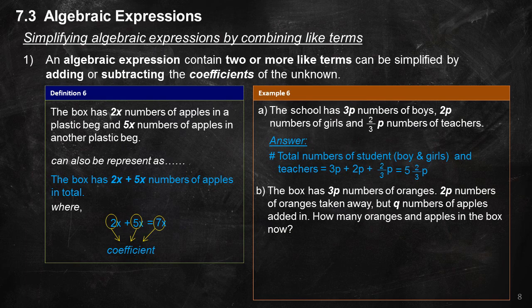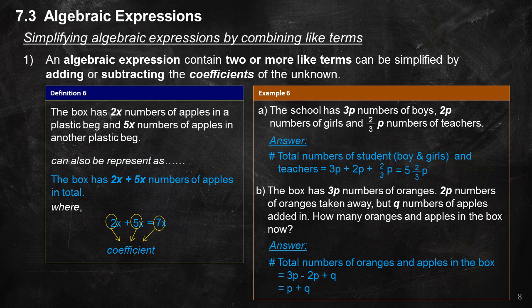Example 6B: The box has 3P numbers of oranges; 2P numbers of oranges are taken away, but Q numbers of apples are added in. How many oranges and apples are in the box now? Answer: Total numbers of oranges and apples in the box equals 3P minus 2P plus Q equals P plus Q.